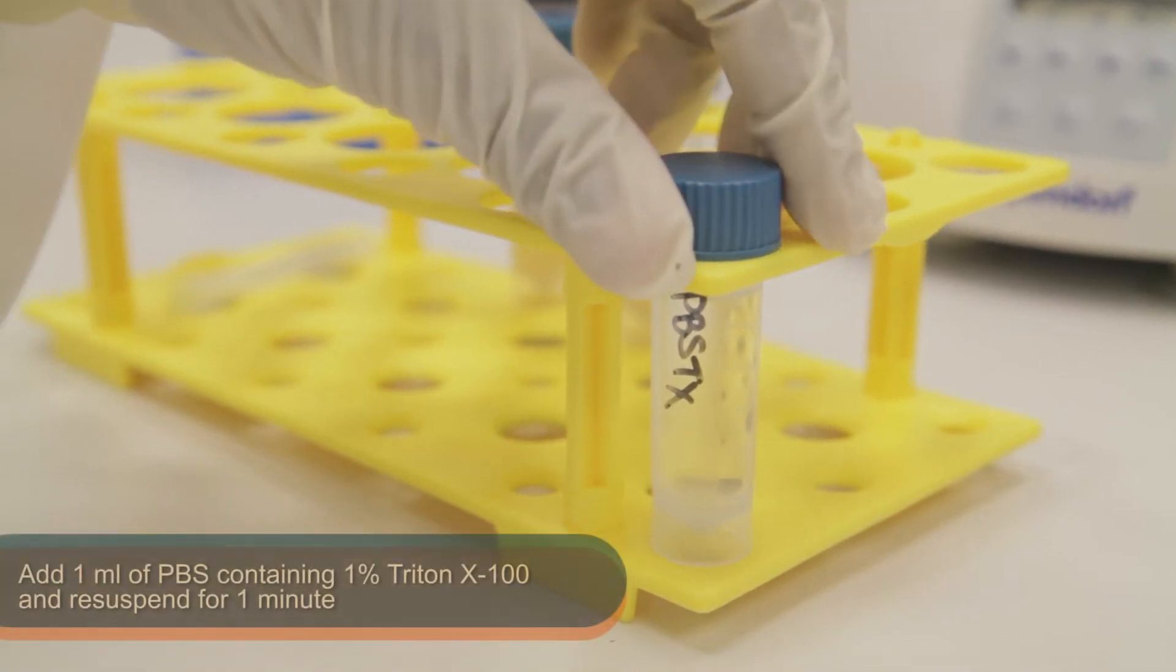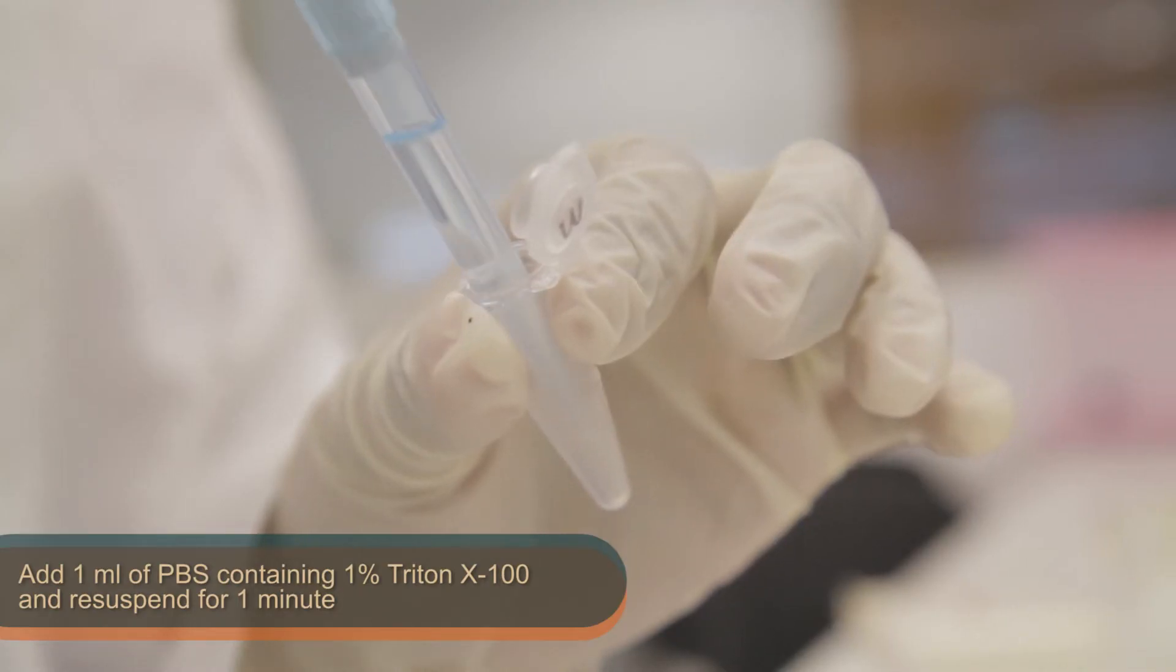Following this, add 1 ml of PBS containing 1% Triton X and re-suspend the cell pellet for 1 minute.